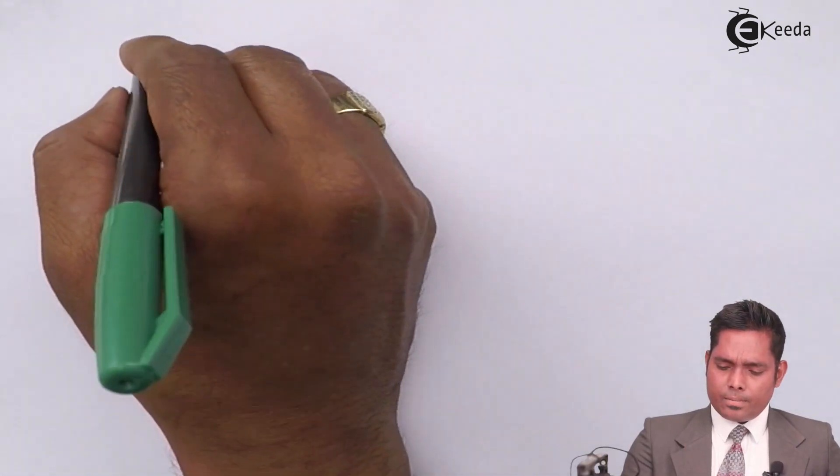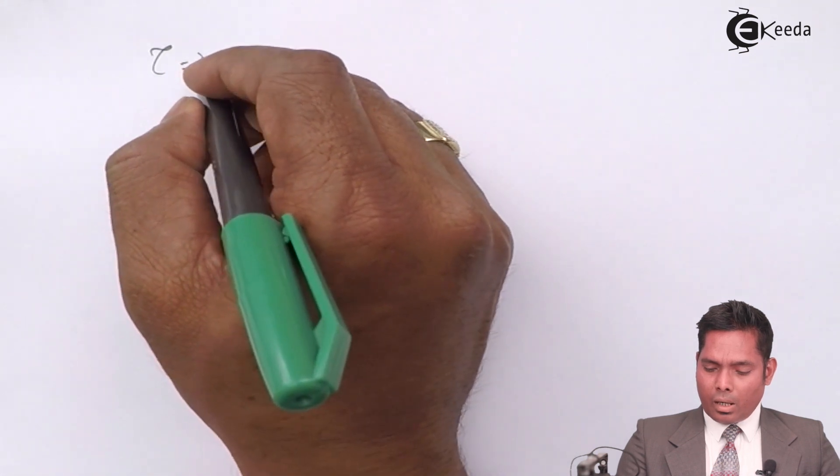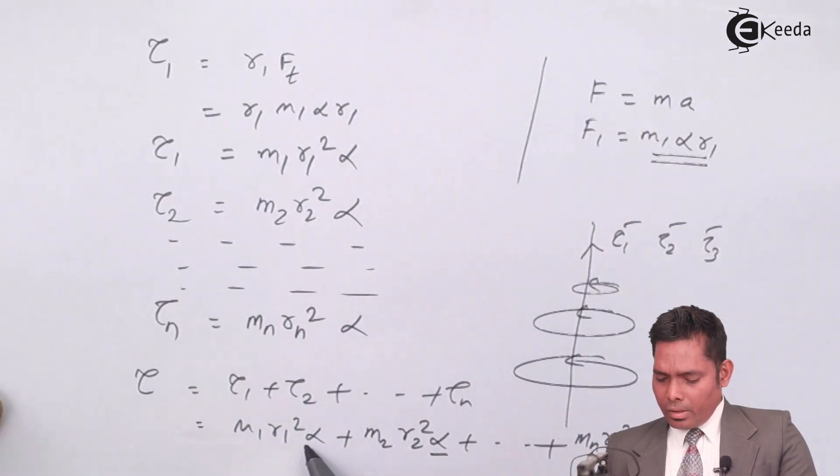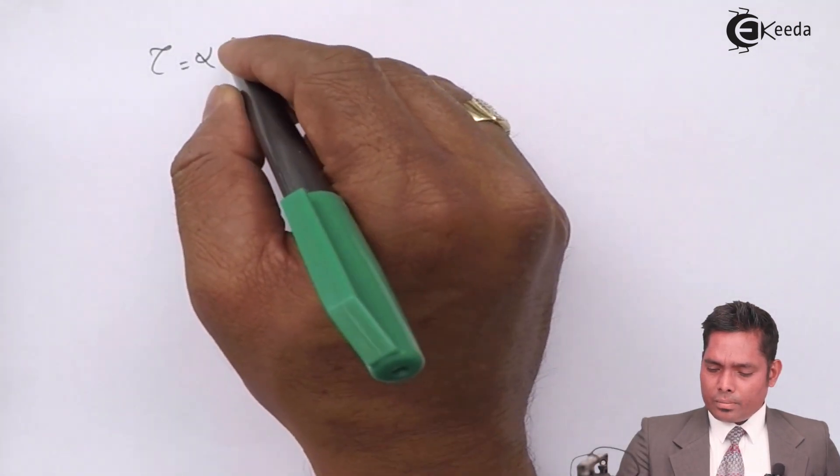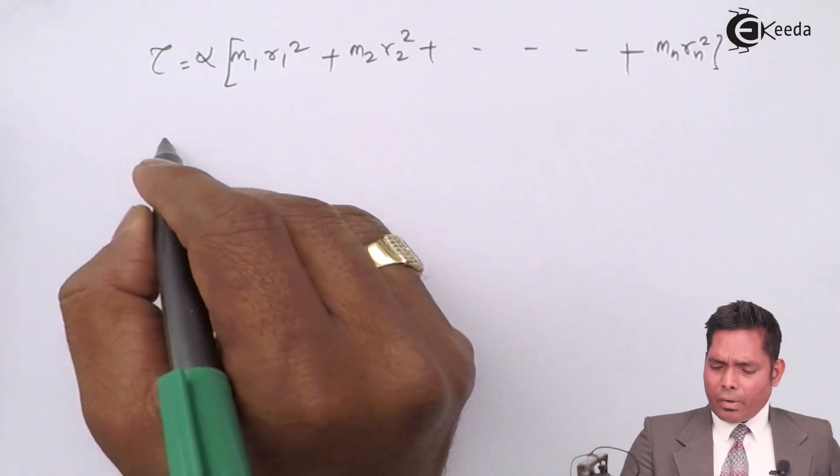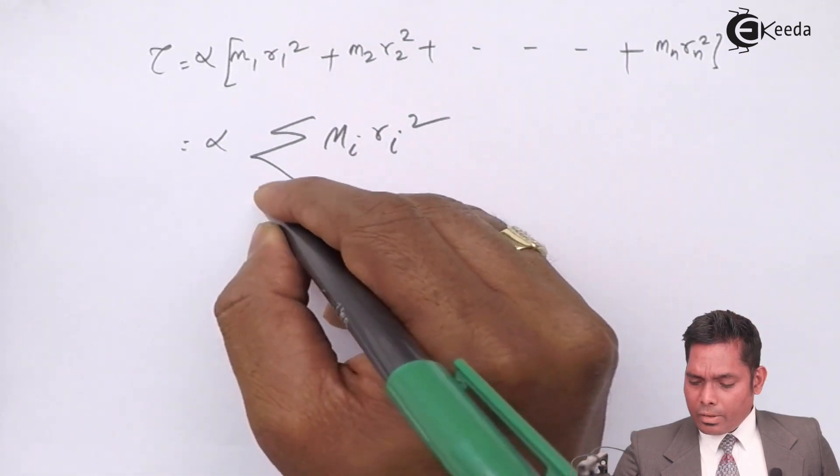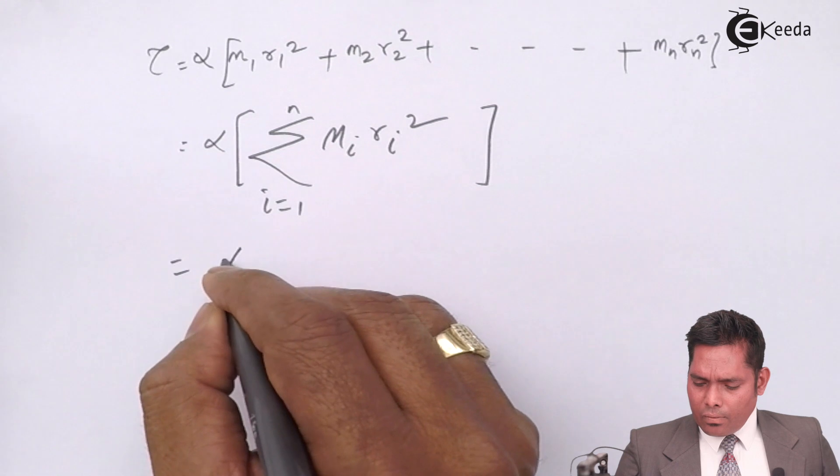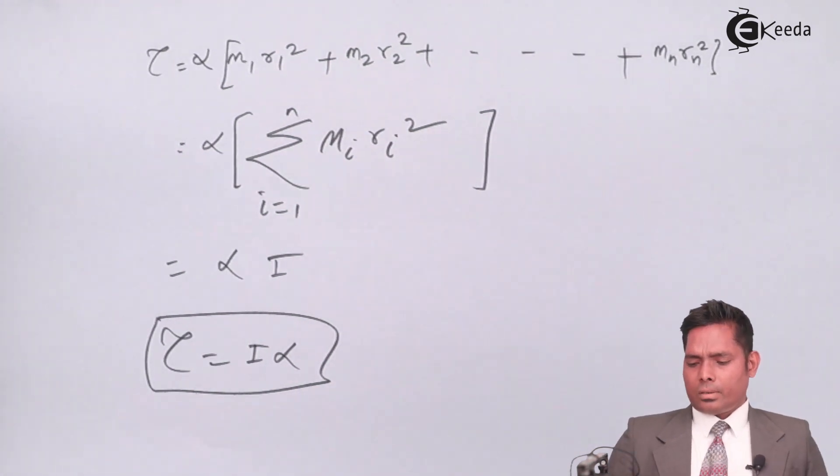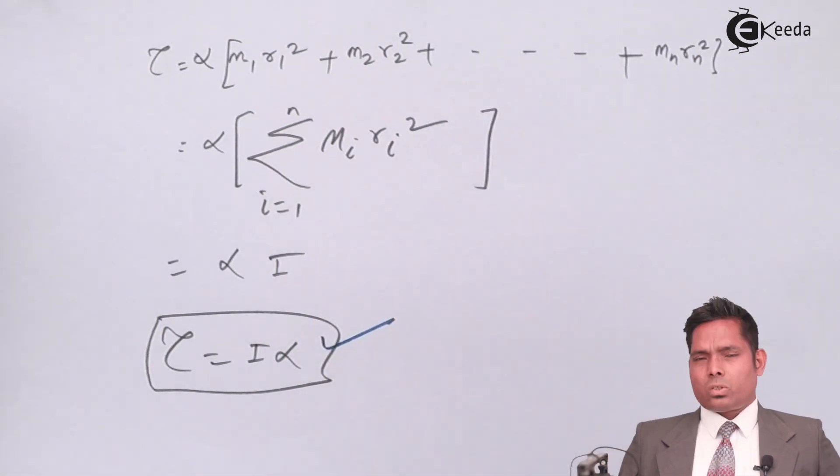So what I got is the torque of the rigid body in rotation. I take common alpha. If I take common alpha from each term, what is left is in the bracket: m1 r1 square plus m2 r2 square plus and so on up to mn rn square. If I do that, then this is sum of all the values of mi ri square, i varies from 1 to n. This is alpha and this is I. So torque is I alpha. And this is the final expression for the torque. Thank you.